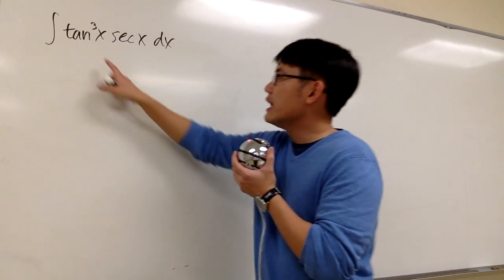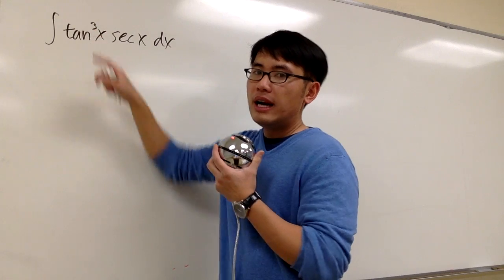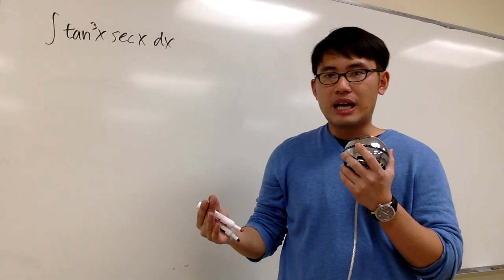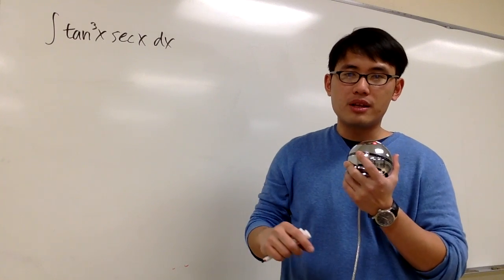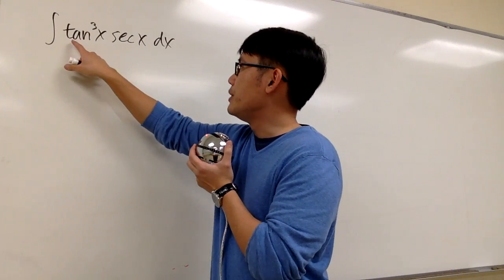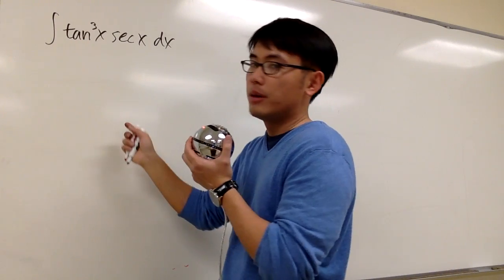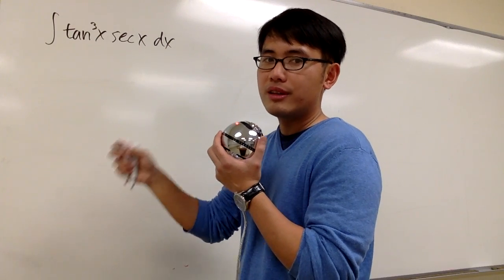Let's think about the identities that we have. We know that tangent squared can be changed into secant squared minus 1. So the first step will be, let's take a look at this and then break it apart into tangent squared times tangent.